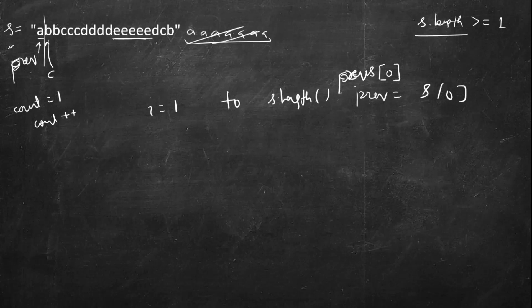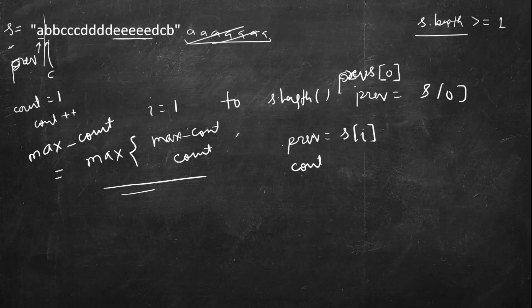If it's not same, that means we found a different character, so we will check what is the maximum count so far. So maximum count will be max of this max count and the running count. If it's same keep incrementing the count. If it's different then reset everything, so previous becomes the new character s[i], count becomes one, and also you update the max count. And finally when you reach the end of this, max count will be holding the maximum count we encountered during the iteration.